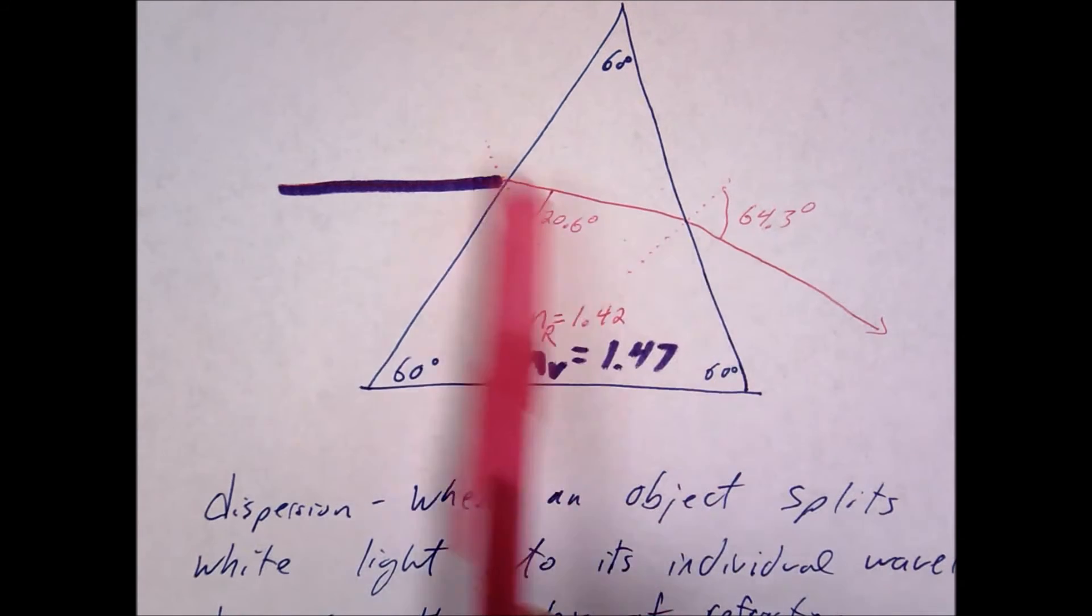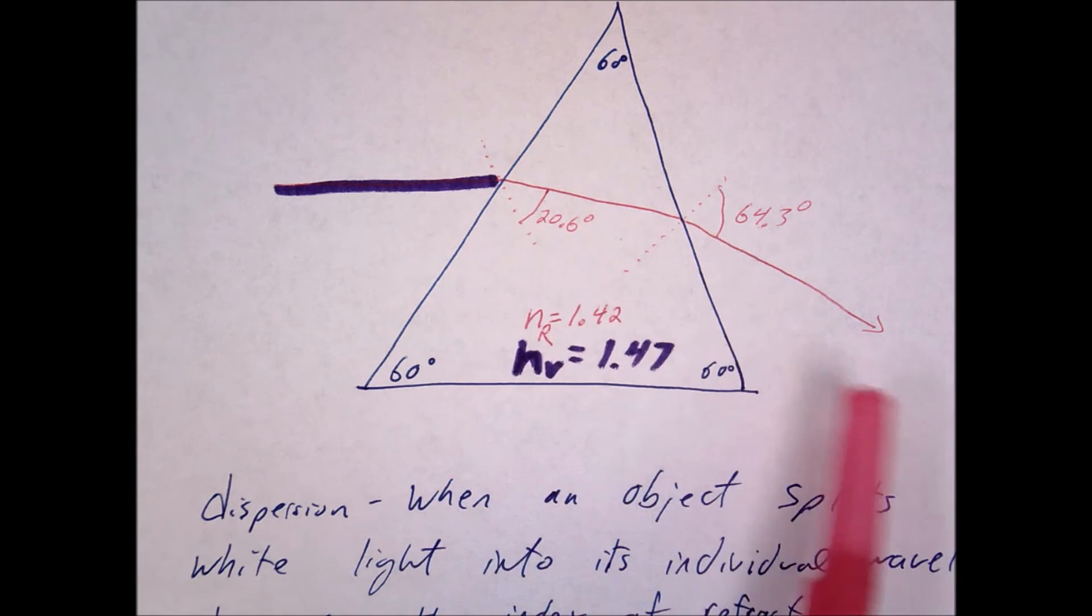If you can, predict the path of the violet. If you're not quite sure, calculate the angle and then go ahead and draw it in.